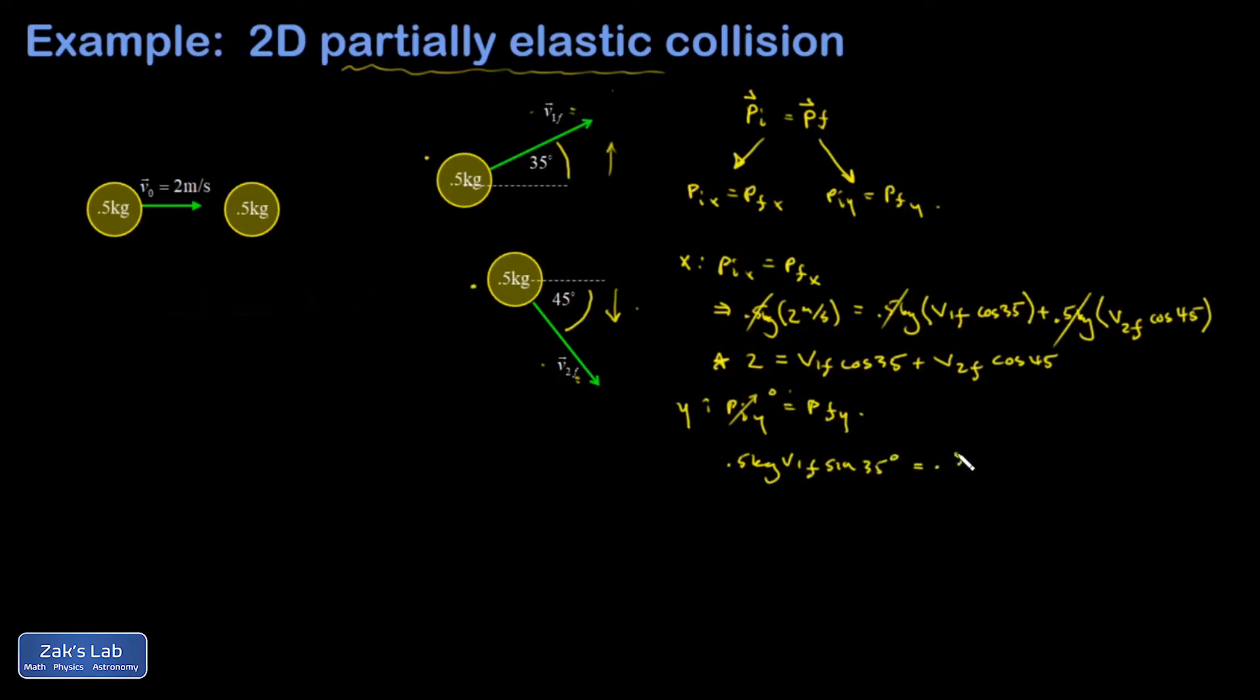the magnitude of its momentum is going to be 0.5 times V1 final sine of 35 degrees. And that's got to be equal to the magnitude of the downward momentum from the other mass. So 0.5 times V2 final times the sine of 45 degrees. I can cancel my 0.5s and I get a second important equation. V1 final sine 35 is equal to V2 final sine 45.